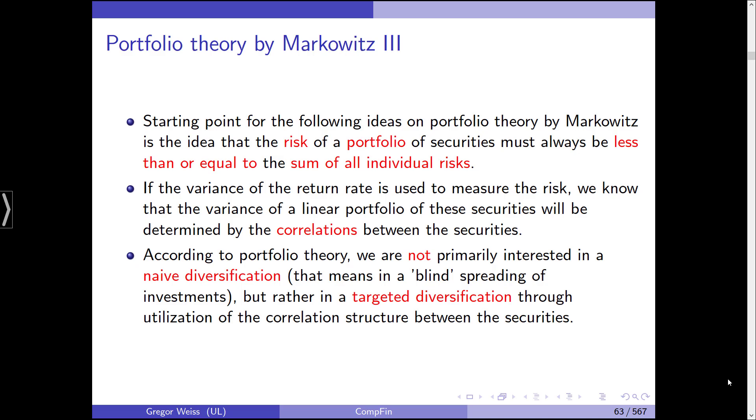But if you now combine these two investments in a portfolio, ideally you want to see a risk reduction due to the fact that for some reason, if Tesla goes up, Microsoft goes down maybe, and vice versa. So there's diversification and there is an offsetting effect between the two stocks or N stocks. So if the variance of the return rate is used to measure the risk, we know that the variance of a linear portfolio will be determined by the correlations between those two or N securities. And according to portfolio theory, we are not primarily interested in a naive diversification.